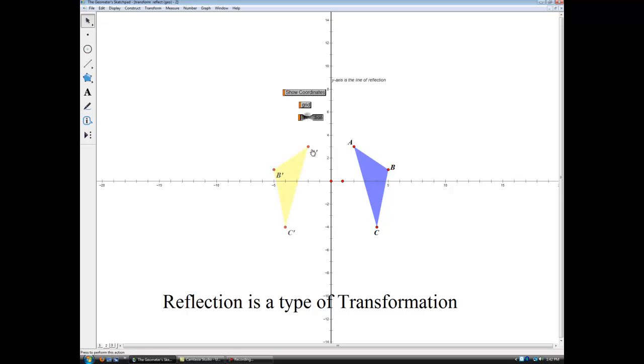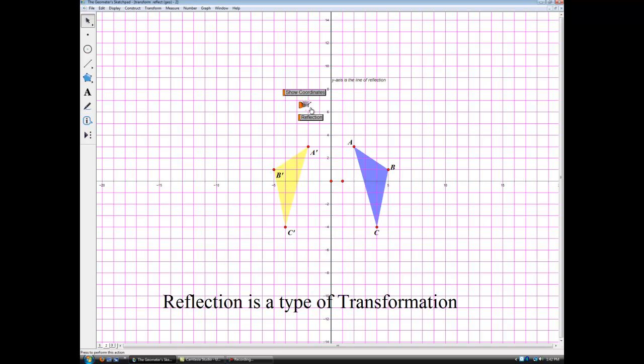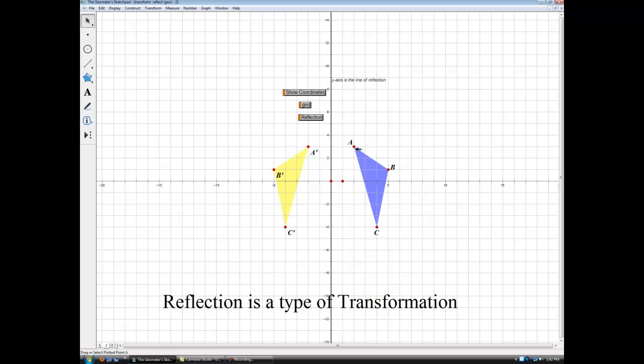I'm sure everyone can picture what it looks like. A becomes A prime, B becomes B prime and so on. We'll put the grid up here so we can see a little more clearly the actual coordinates of these points.